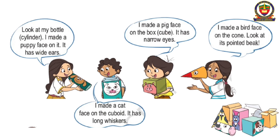I made a cat face on the cuboid. It has long whiskers. I made a pig face on the box — it's a cube. It has narrow eyes. I made a bird face on the cone. Look at its pointed beak.